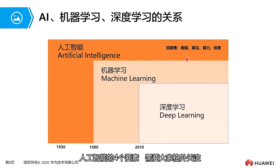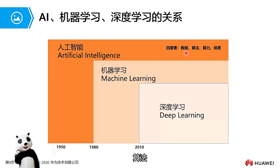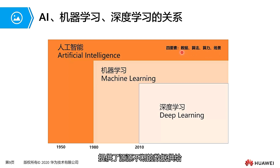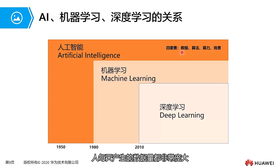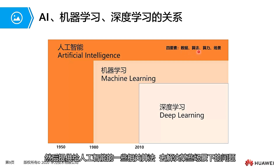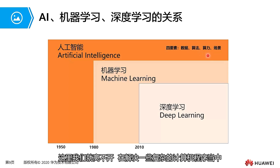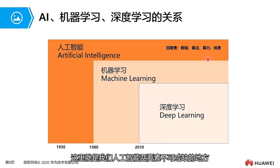The four essential elements of artificial intelligence require special attention: data, algorithm, computing power, and scenarios. Data provides a constant supply for AI; with the advent of the big data era, the amount of data generated every day is very large. We need to process data and provide relevant algorithms for AI to solve problems in certain scenarios. Complex computer programs require powerful computational support — this is why computing power is an indispensable element.